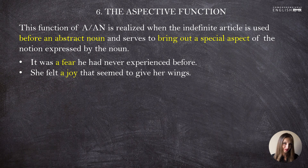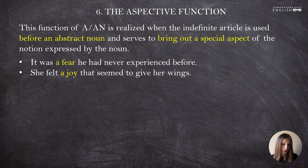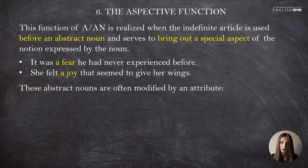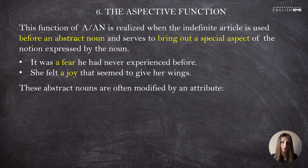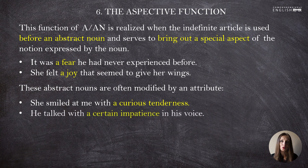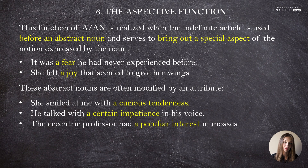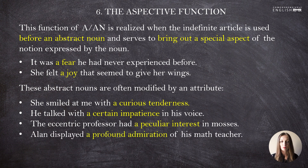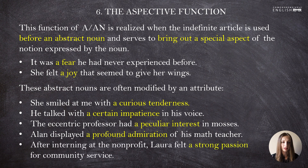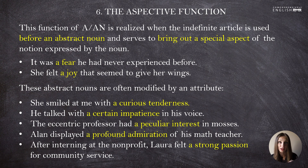'It was a fear he had never experienced before.' Fear is an abstract noun — normally we would use the zero article — but here we use 'a' to stress that it was a very particular, specific fear. Usually in these cases the abstract nouns are followed by a subordinate clause that describes them or they have descriptive attributes. Examples with attributes: 'She smiled at me with a curious tenderness.' 'He talked with a certain impatience in his voice.' 'The eccentric professor had a peculiar interest in mosses.' 'Alan displayed a profound admiration of his math teacher.' Curious, certain, peculiar, profound, strong — these are all descriptive attributes that make using the indefinite article necessary.